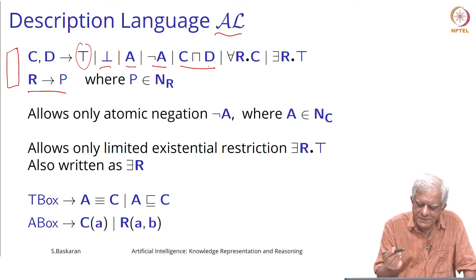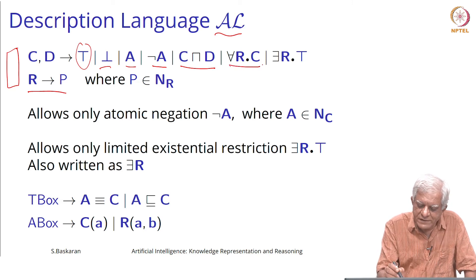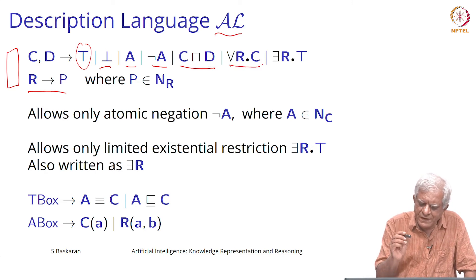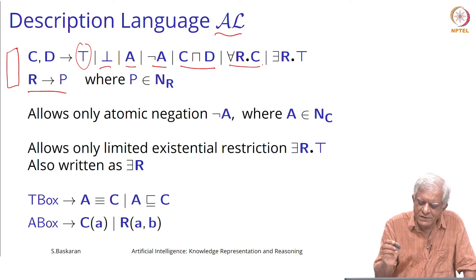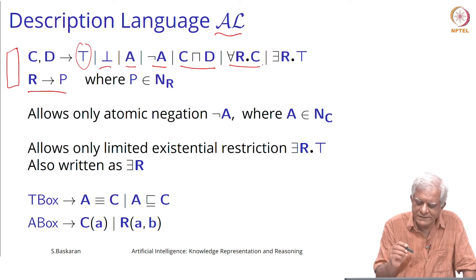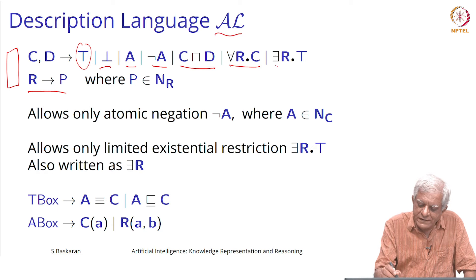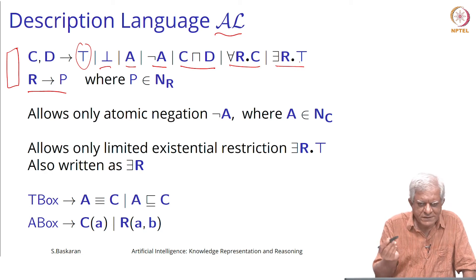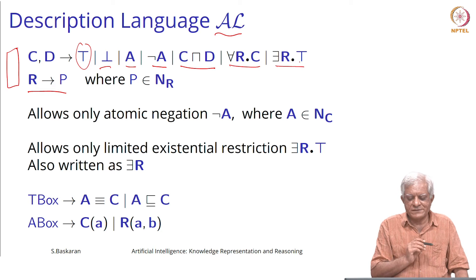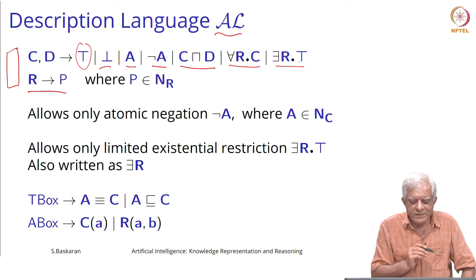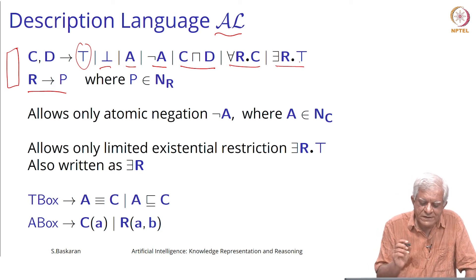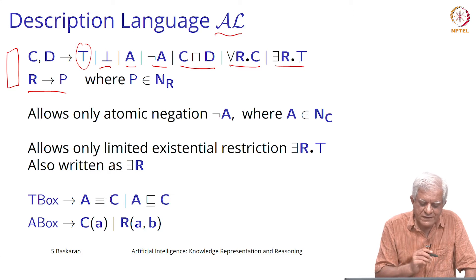The intersection of two concepts, the for all restriction that all role fillers must come from a class C, and a restriction which says that there must exist at least one role filler. These are the only constructs that we can use in AL.